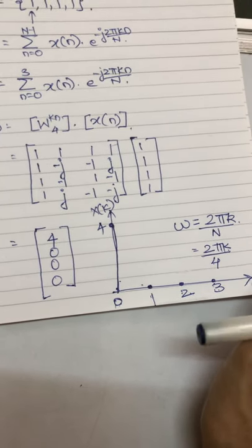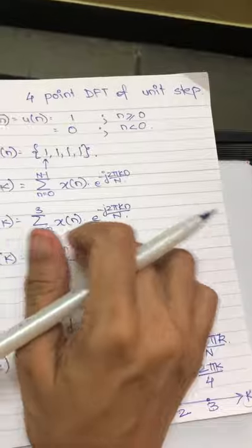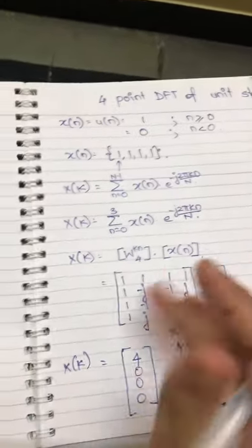Is it understood? Kindly let me know if there is any doubt. So this is 4-point DFT of unit step signal.